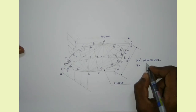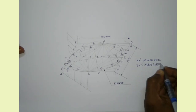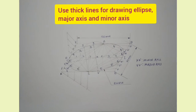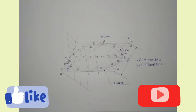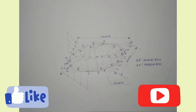Major axis is labeled. Our drawing is completed. We have to use thick lines for drawing the curve, that is the ellipse, and also thick lines for the major and minor axis. I hope you understood the drawing. If you like the video, please subscribe to my channel and click the bell icon. Thank you.